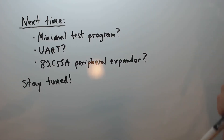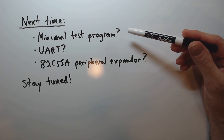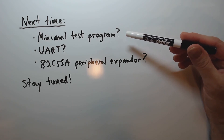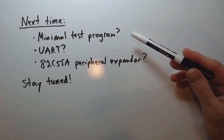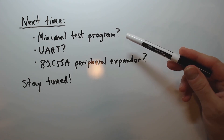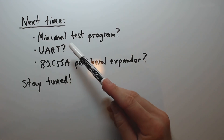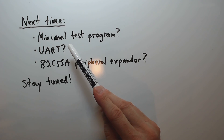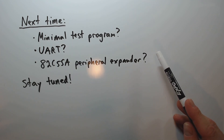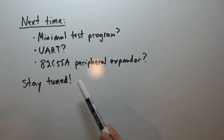That's a good place to wrap things up. Next time, there are a few possibilities: showing a more minimal test program that only involves ROM, connecting a UART device to develop a simple monitor program for communicating with a host PC, or adding an 82C55A peripheral expander chip. There are all kinds of possibilities now, so stay tuned.